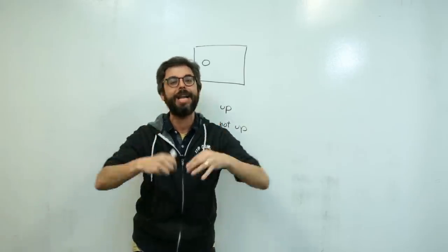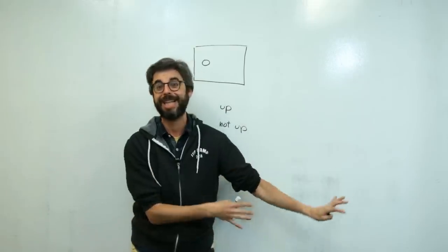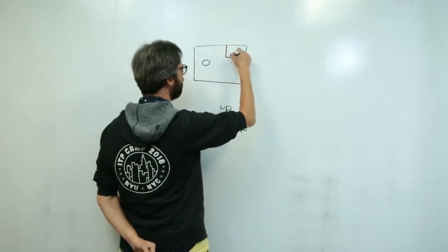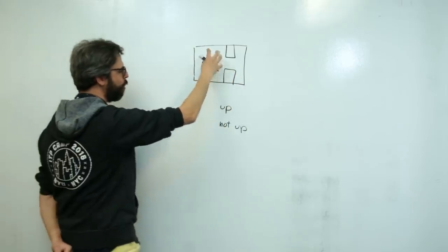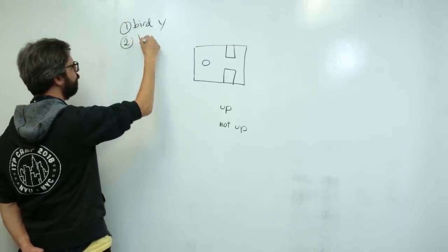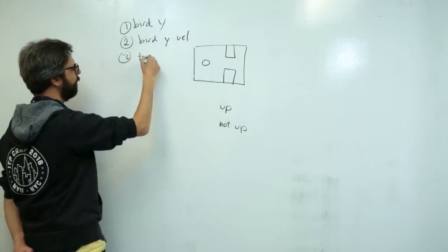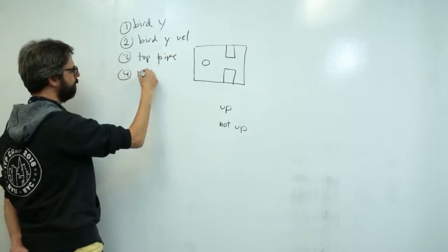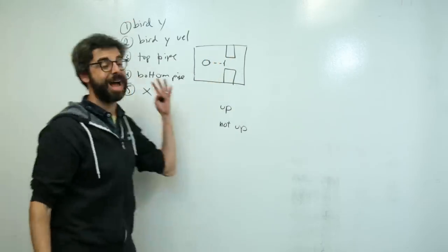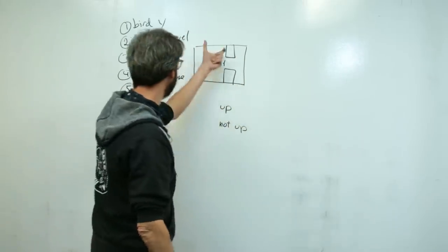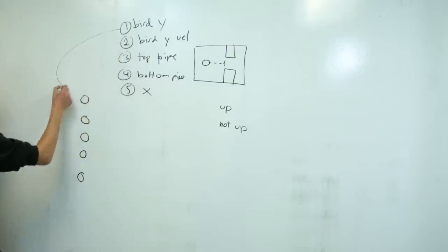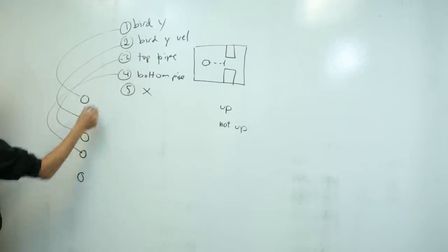That would be especially nice once I have convolutional layers with TensorFlow.js, which I don't have in my toy neural network library. I've done the feature extraction and decided the inputs to use are: the bird's Y position, the bird's Y velocity, the top pipe location, the bottom pipe location, and the distance to the nearest pipe. So the neural network has five inputs, all normalized to a value between 0 and 1.